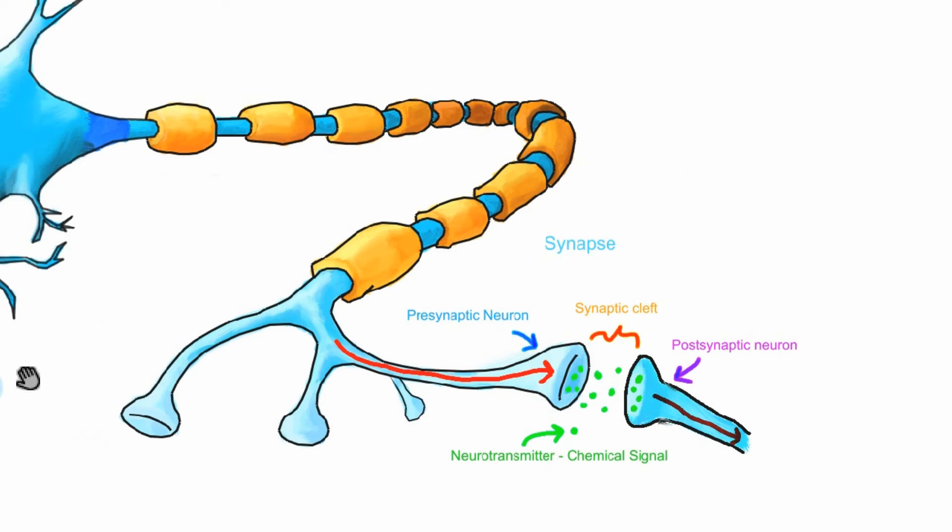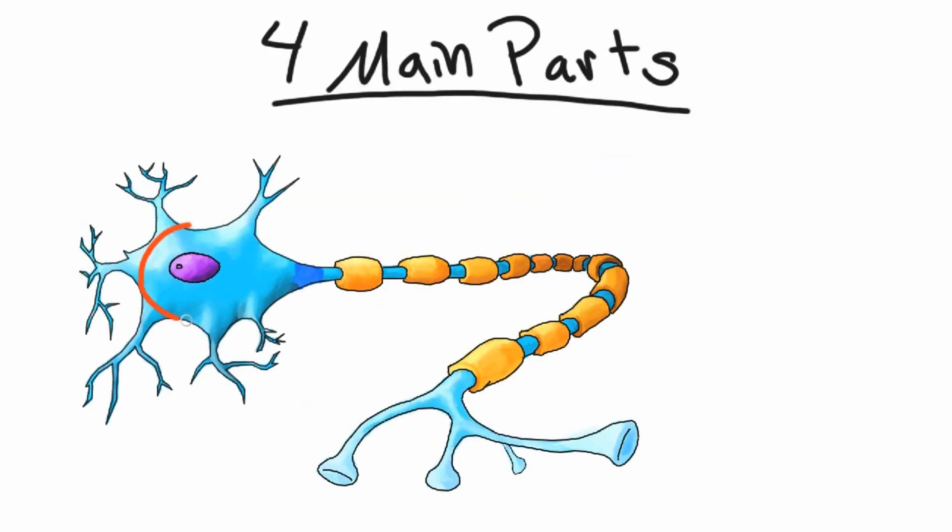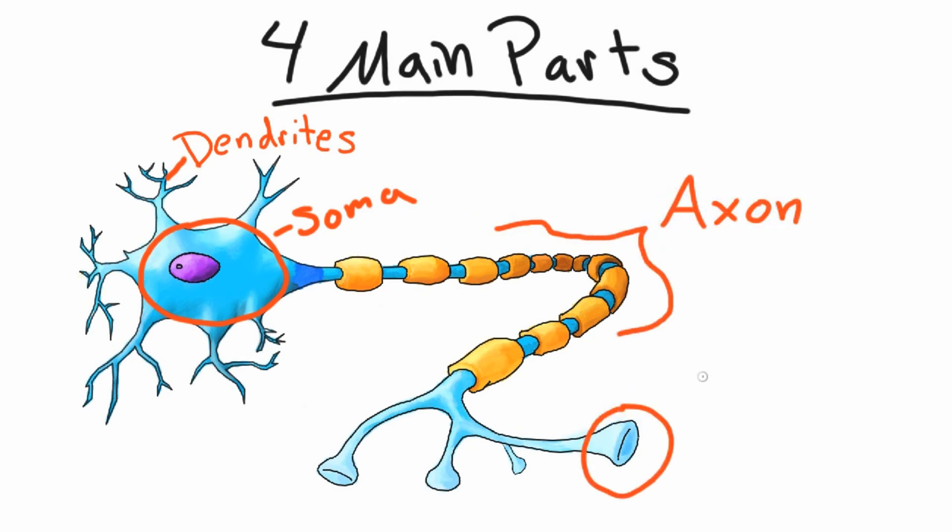And there you have it. And now it's overview time! So now you have your basic parts of the neuron: the cell body or soma, the dendrites, the axon, and the axon terminals.